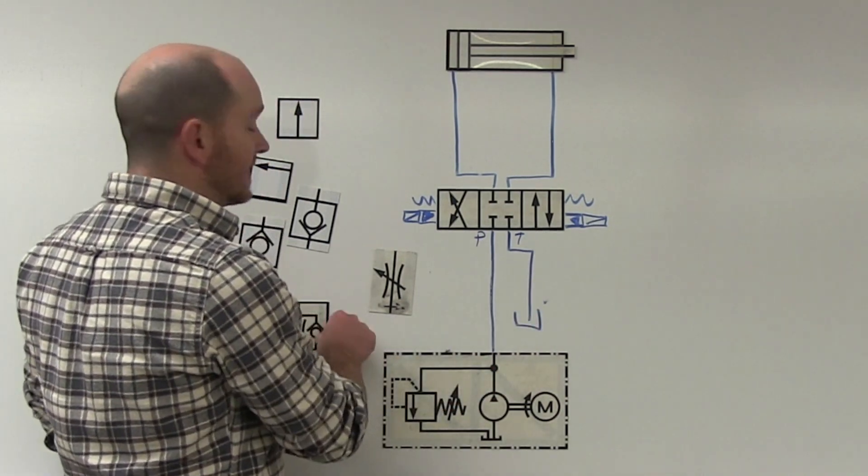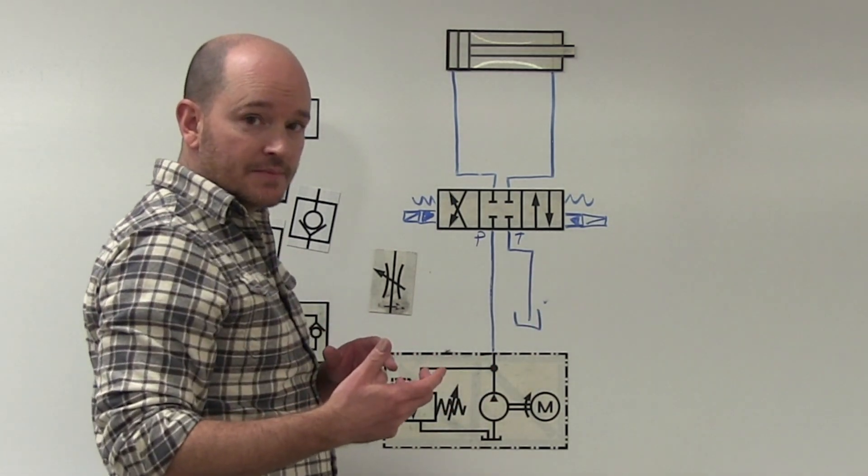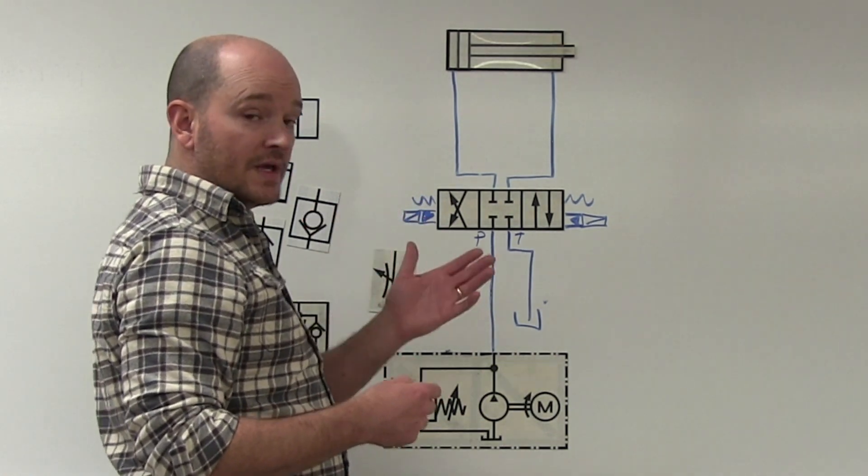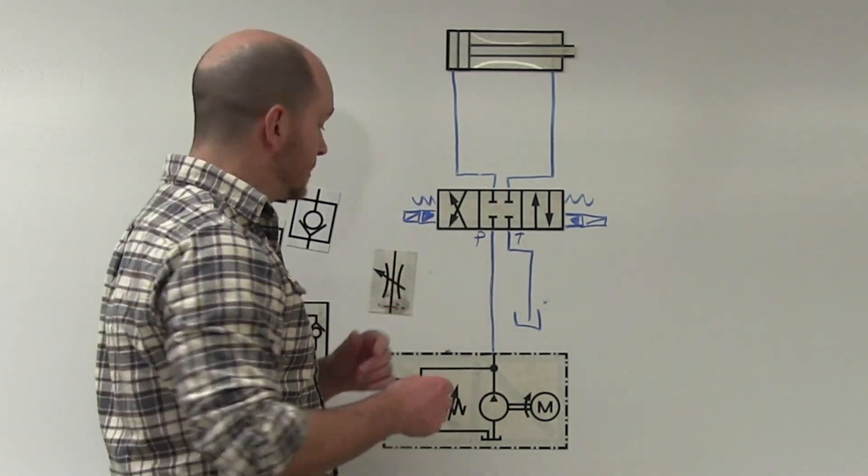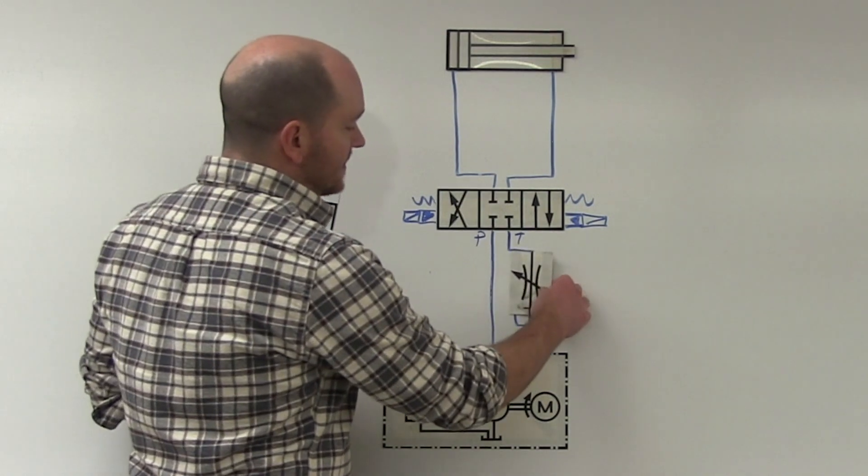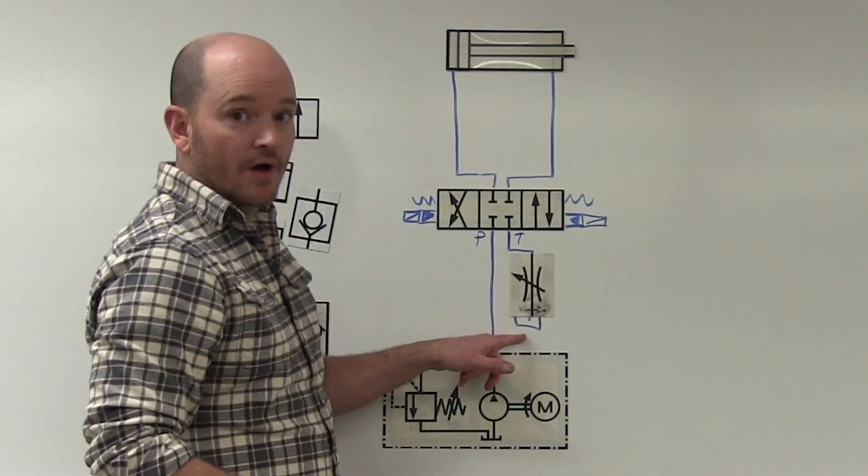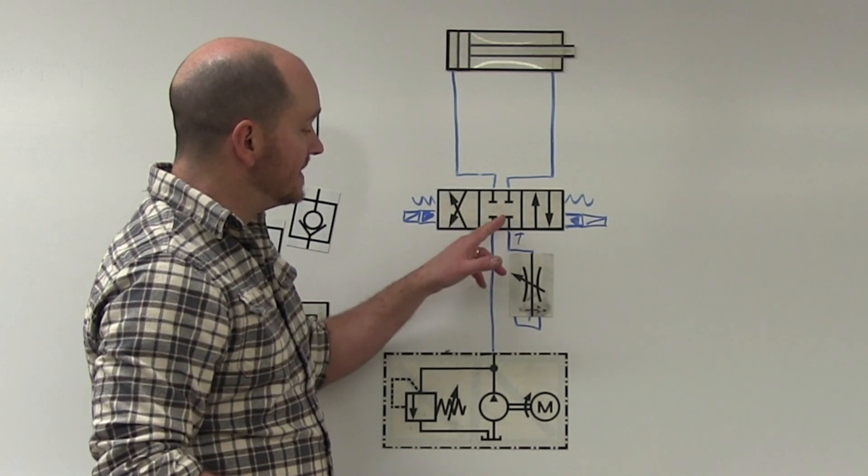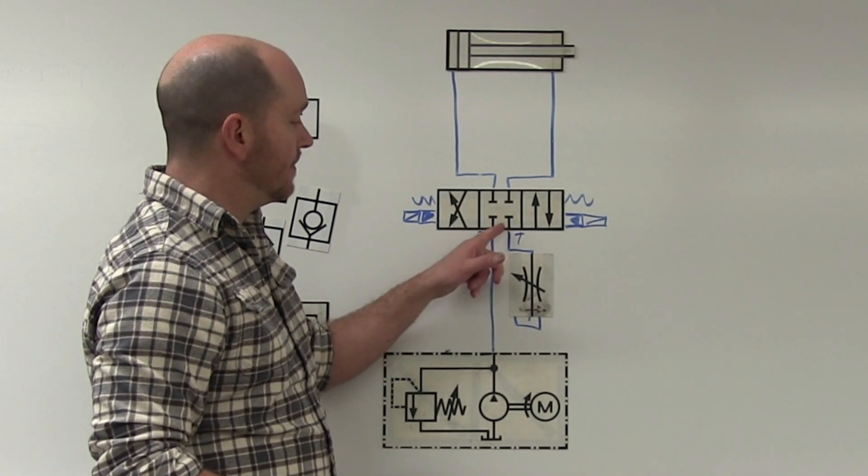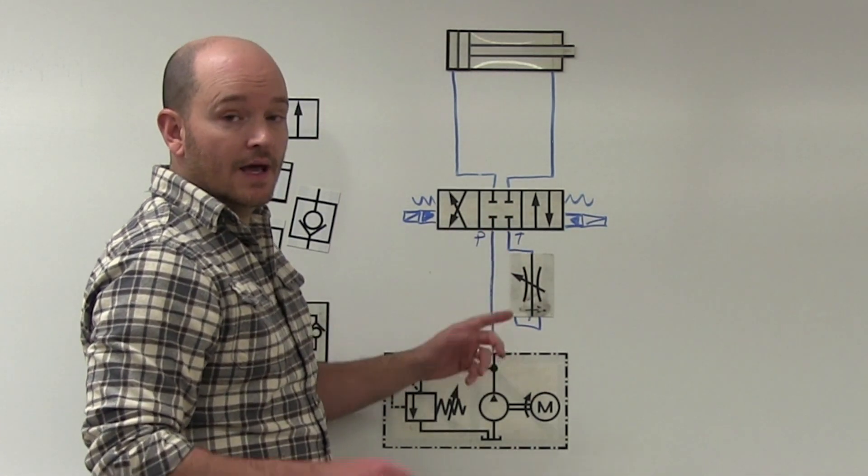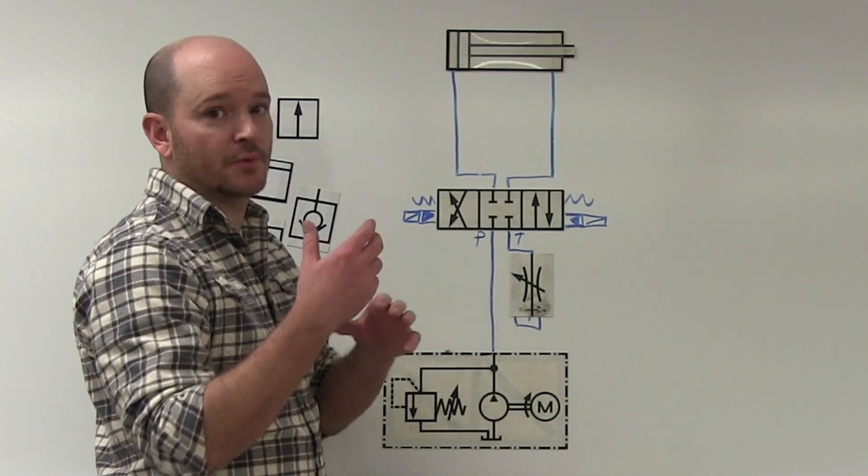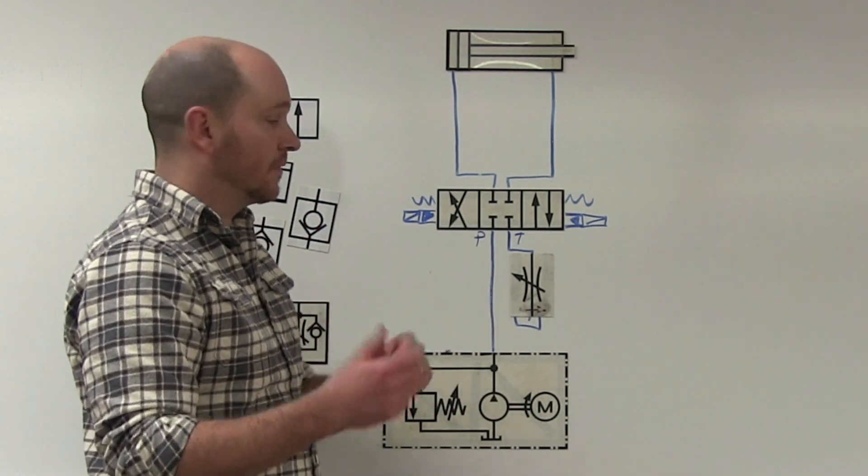This is something that you see with single acting cylinders sometimes, that are using like a 3-2 directional control valve. People will sometimes meter those out by placing a needle valve between the tank port down to the tank. And that can save money, sometimes it's more convenient for installations. There's a number of reasons for that.